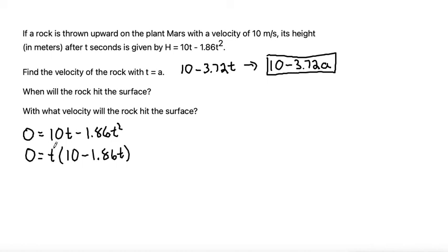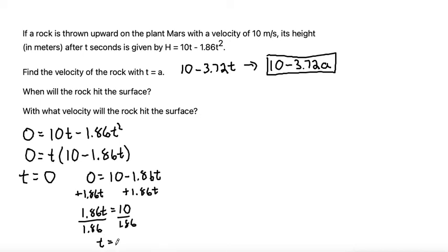And then we can use the property that when we have two things that are multiplied that equal zero, we can set them equal to zero separately. So we have t is equal to zero, which is when the rock is being thrown upward. And then we also have zero is equal to 10 minus 1.86t. So to solve for t in this equation, let's add 1.86t on both sides.